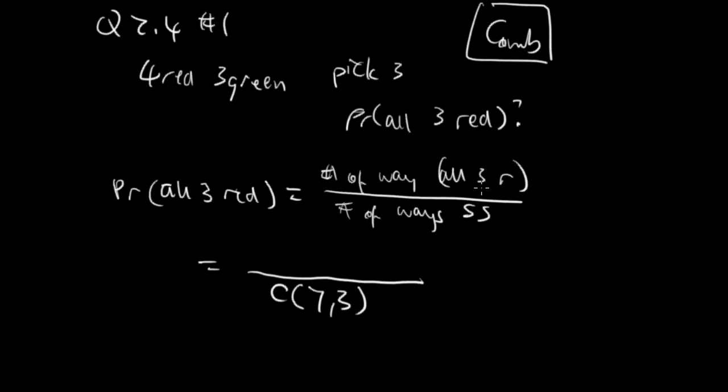So the number of ways that all three can be red is if you choose three red from the four. So three red from the four and also zero green from the three.